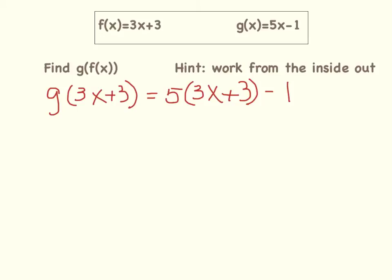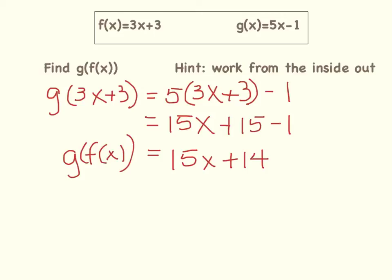Now we are ready to simplify. I know that 5 times 3x is 15x, and 5 times 3 is 15, minus 1. Now I can combine my like terms of 15 minus 1. So I am going to have 15x, and 15 minus 1 is 14, so plus 14. So g(f(x)) = 15x + 14.